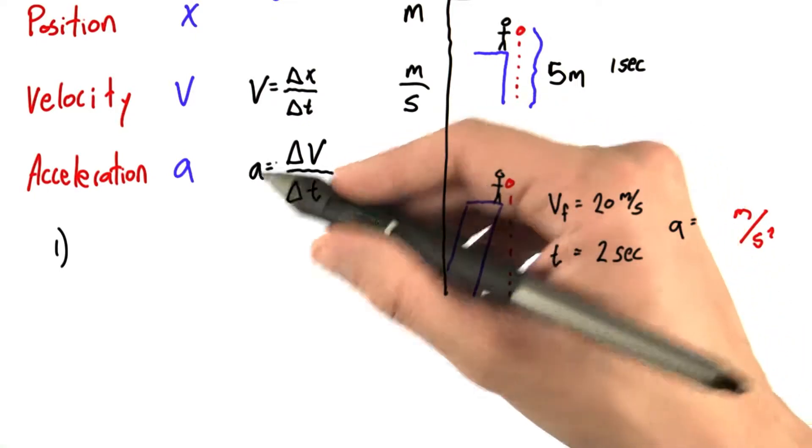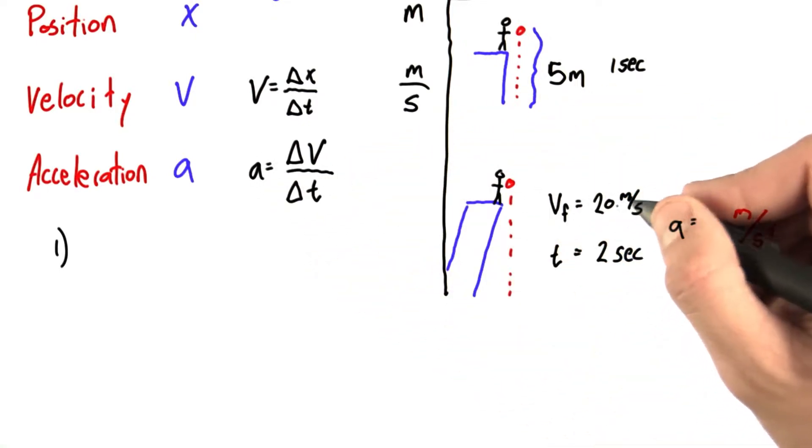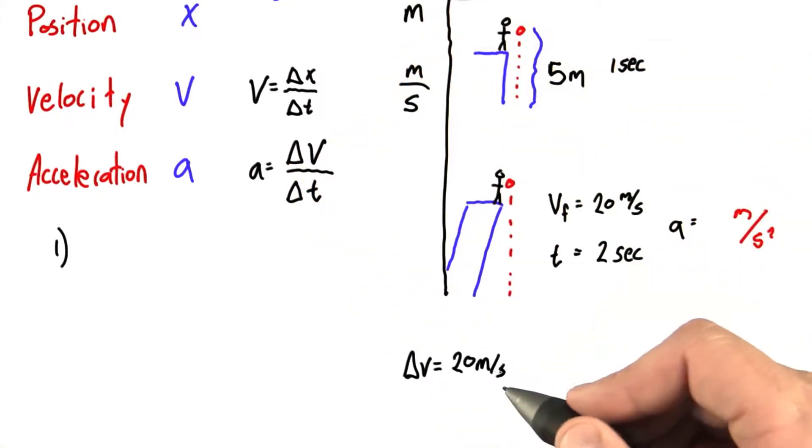First, you might have used this equation, this definition of acceleration, to say, okay, well, the ball changes its velocity by 20 meters per second by going from 0 to 20, which means delta v is equal to 20 meters per second.